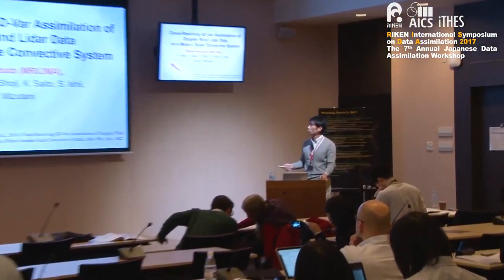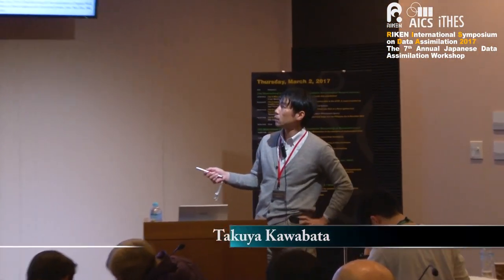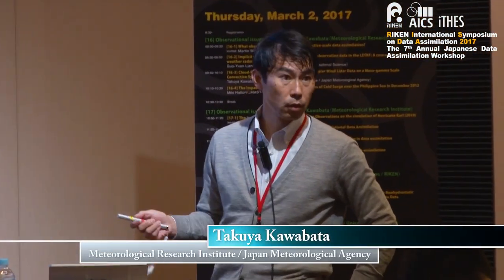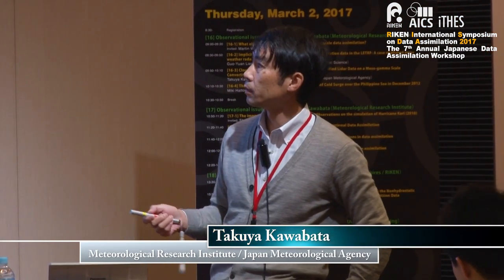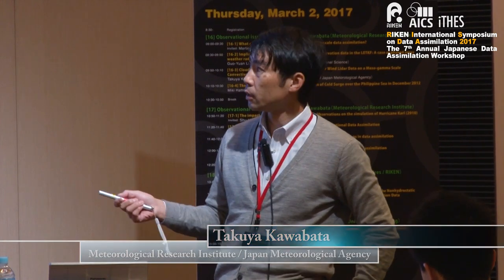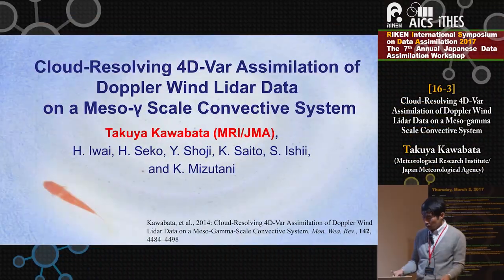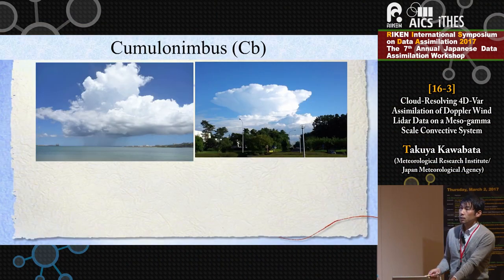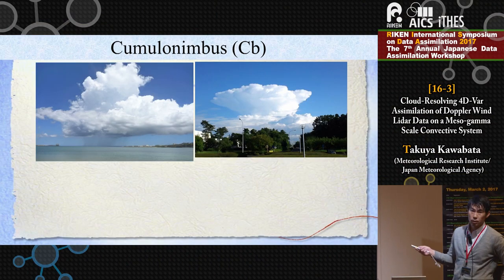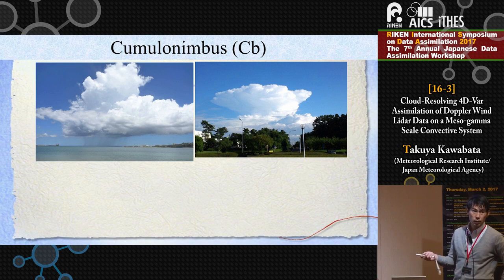I will talk about the assimilation of Doppler wind LIDAR data using a cloud-resolving 4D-Var assimilation system on a meso-gamma scale convective system. The meso-gamma convective system includes the cumulonimbus, which is part of the thunderstorm.